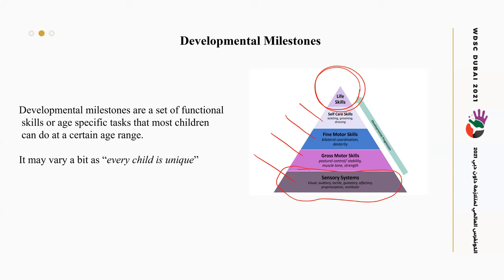Developmental milestones are a set of functional skills or age-specific tasks that most children can do at a certain age range. They may vary a bit, as every child is unique — every child has a unique improvement and development of skills. For example, one child at six months can sit alone; another may need until seven months, and another can do it at five months. So there is a little difference between them.